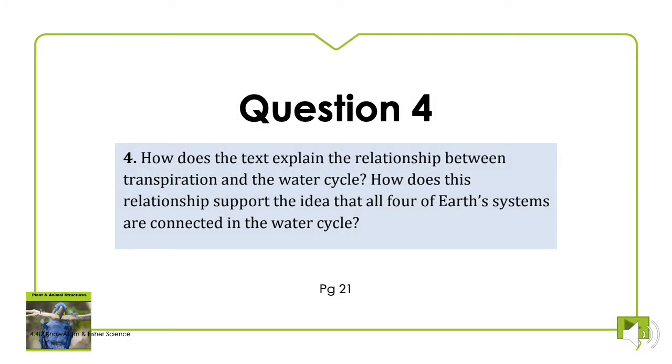Question four, how does the text explain the relationship between transpiration and the water cycle? How does this relationship support the idea that all four of Earth's systems are connected in the water cycle?